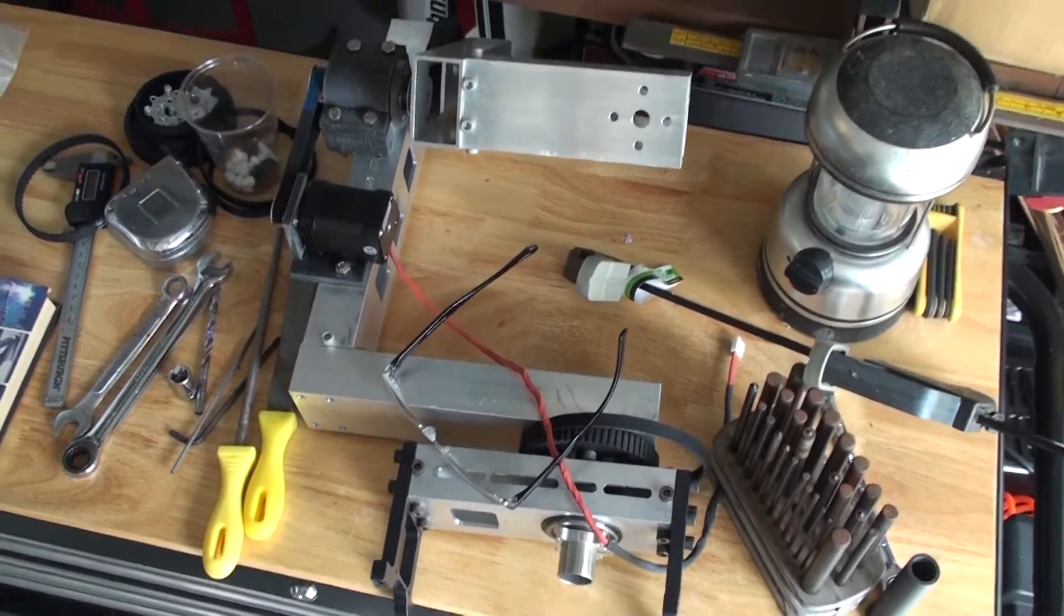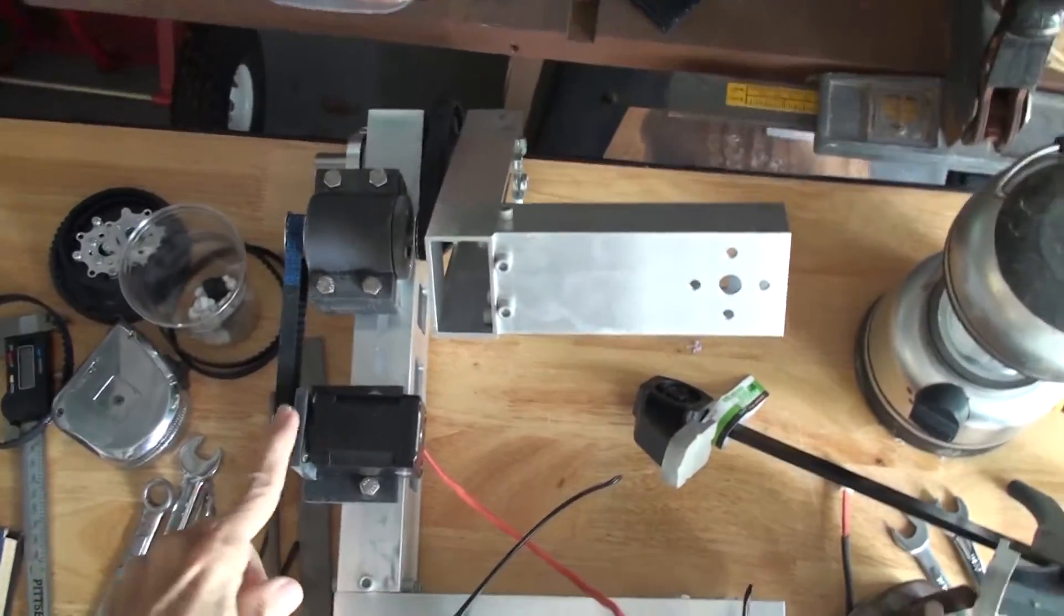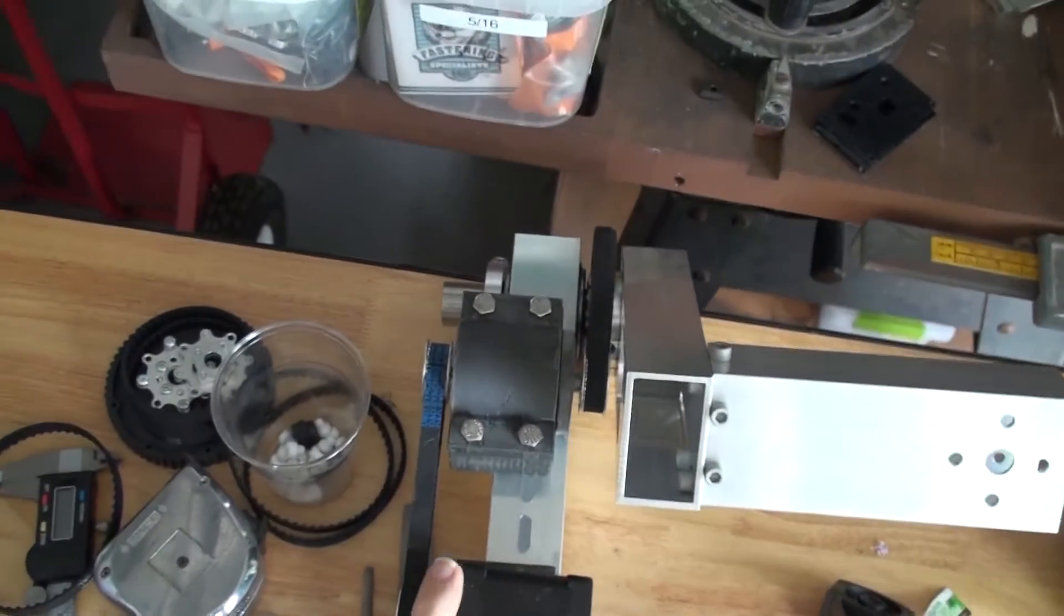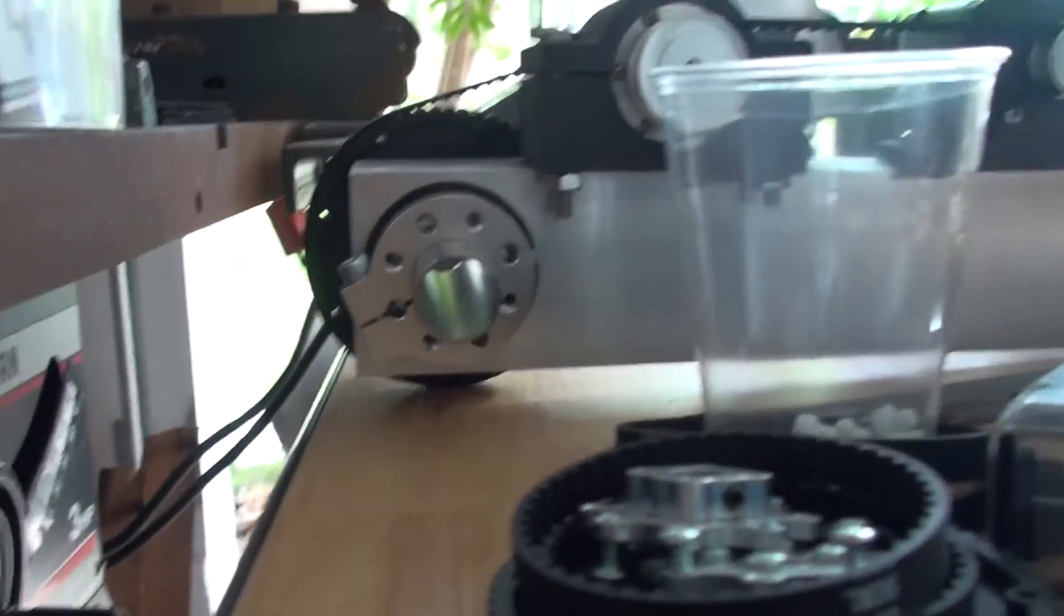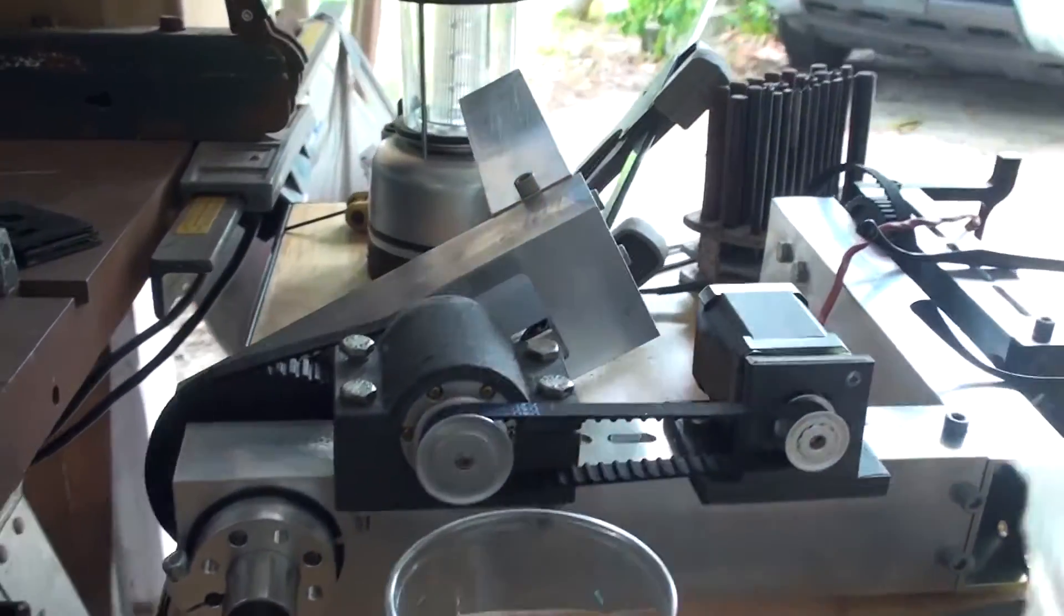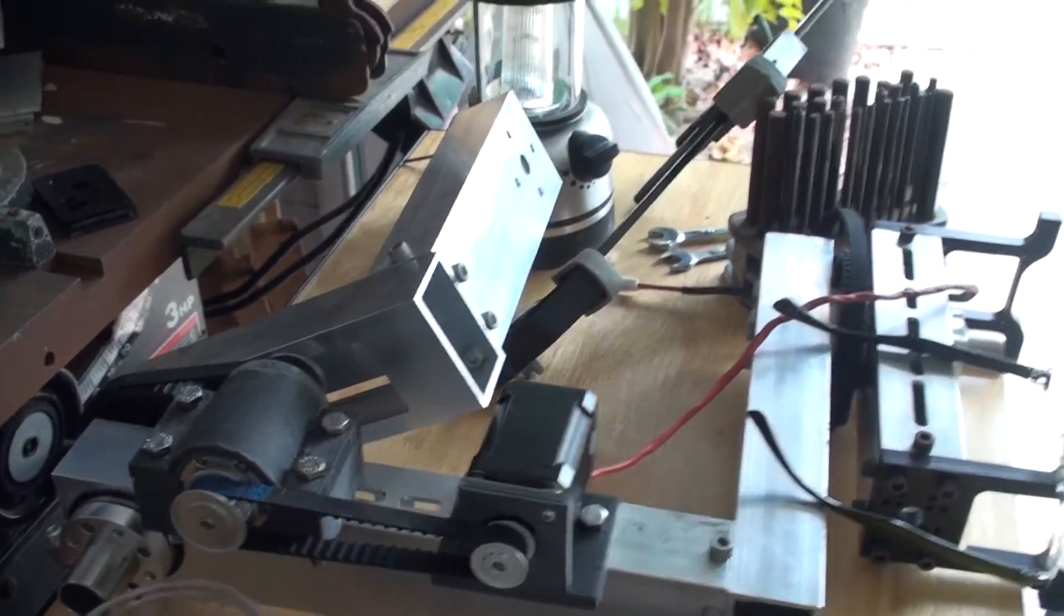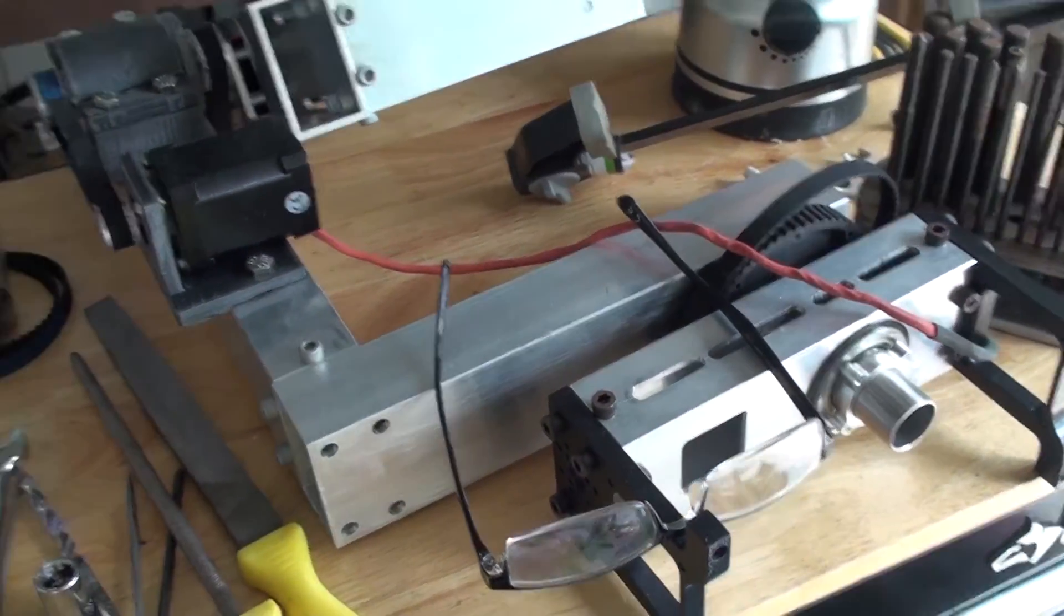This is the pan tilt head I was originally going to put on this rig. It uses a NEMA 17 stepper motor and a 50 to 1 harmonic drive. It has small hollow bearings for the tilt and the pan axis to let wires pass through.